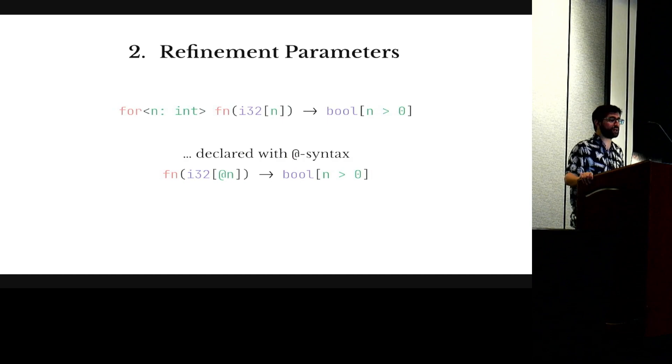The next extension are refinement parameters. In Flux, function types can be parameterized by a refinement value. And in essence, they behave like ghost values that we, at call site, we instantiate automatically and pass into the functions. And just to have a nicer syntax, we have this at notation that lets you declare a parameter implicitly without having explicit quantification.